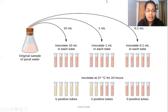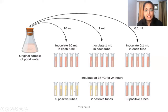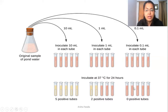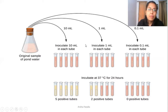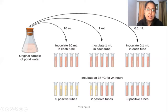In the results, 5 tubes are showing positive results with acid production — a color change in the medium due to the pH indicator dye — and gas production is also observed in the Durham's vial. Only two tubes in the next group are showing positive results, and none of the tubes in the third group are positive. We proceed for the confirmed test using the positive presumptive tubes, preferably the most diluted sample showing a positive result.